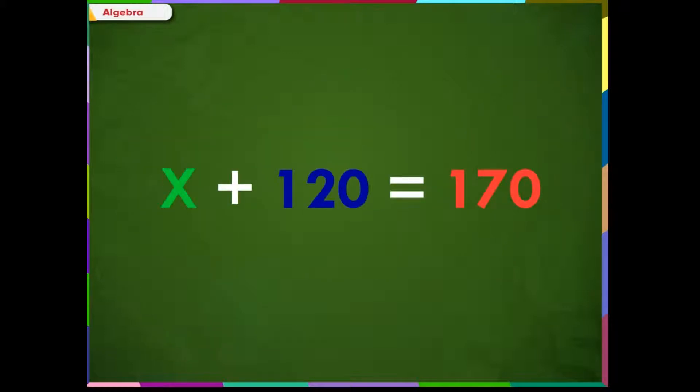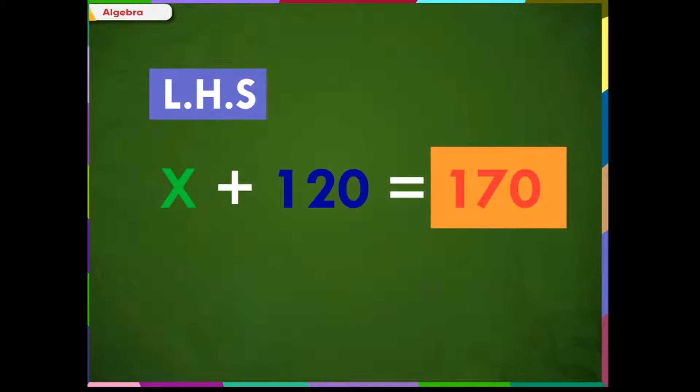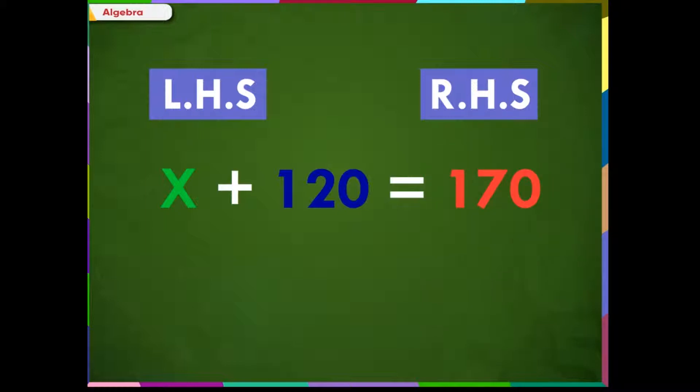An equation has two sides. The quantity on the left of the equal sign is usually called the left-hand side, in short LHS. And the quantity on the right of the equal sign is usually called the right-hand side, in short RHS.